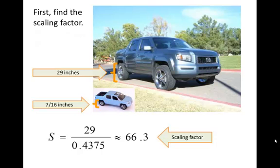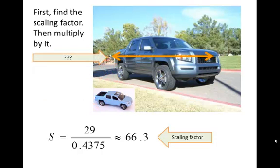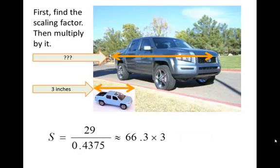Now that we've got the scaling factor, we can multiply by it. We're looking for the length of the truck, so we need to take the length of the small truck as our starting point. The small truck, remember, was 3 inches long. So if we take 66.3 times 3, we'll end up with 199 inches. And so our truck is approximately 200 inches long.